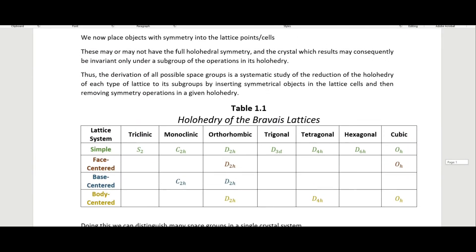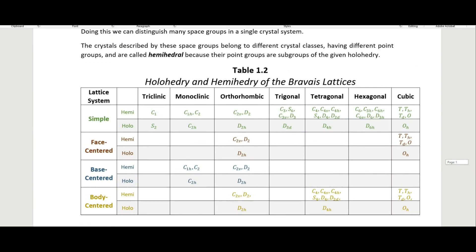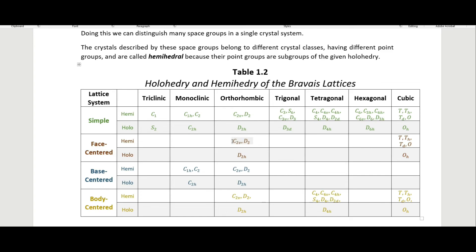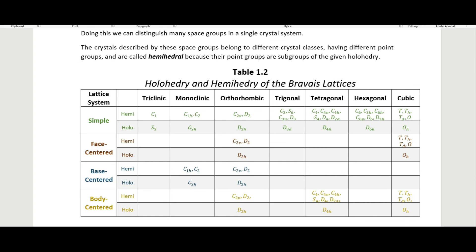So that is how we get to the space groups from our Bravais lattices. From the holohedry we derive the hemihedry by removing symmetry elements from the holohedral point group, and you can keep reducing depending on the symmetry of the object placed into the lattice. The lattice has the holohedral point group, but when you place objects of lower symmetry into it, the lattice moves down to these hemihedral point groups. That's the take-home message of this video. I hope you found it helpful and I'll see you in the next one.